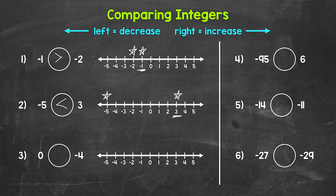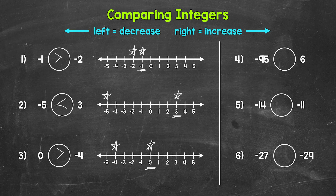Moving on to number three, we have: zero is greater than, less than, or equal to negative four. Let's take a look at the number line. Zero is right here and negative four is right here. Zero is further to the right on the number line, therefore it's greater than negative four. So reading this from left to right, zero is greater than negative four. Whenever we have zero and a negative, zero is always going to be greater than a negative.